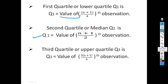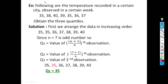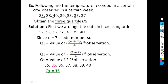For example: the temperature records in a certain city for a week are 35, 38, 40, 39, 35, 36, 37. Obtain the three quartiles Q1, Q2, and Q3. The data is of individual type, so first arrange it in increasing order. The smallest observation is 35 and the largest is 40. Since n = 7, which is odd, we use the odd-n formulas.